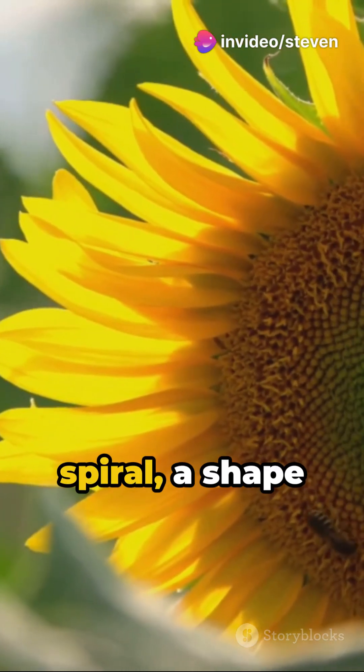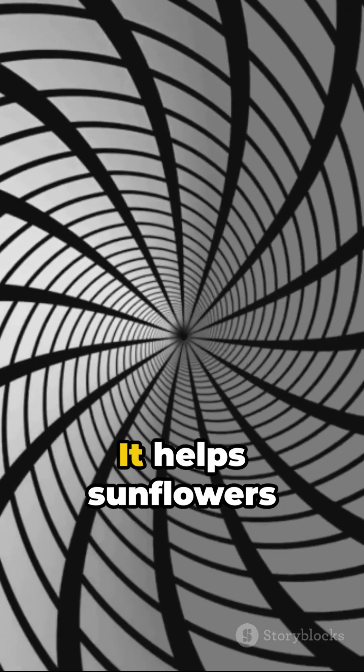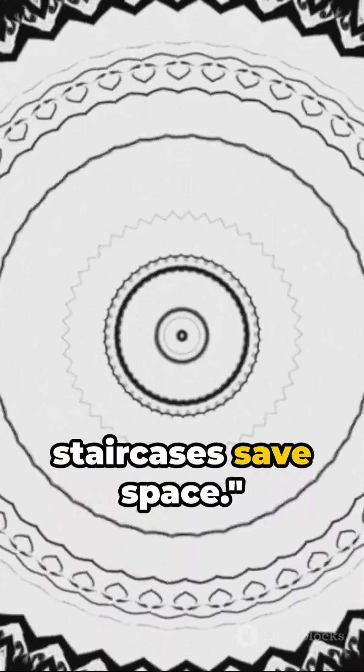Draw it out and you get the Fibonacci spiral, a shape that's not just visually pleasing but functional too. It helps sunflowers pack in the most seeds and spiral staircases save space.